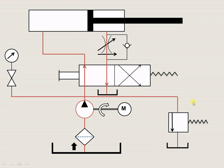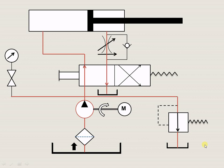Now let us understand how the pressure relief valve works. The fluid pressure is sensed through this particular line. If the pressure is more than the design pressure, this valve will open as shown by this arrow and the excess liquid will go back to the reservoir, so that the system pressure can be restored back to its original design value.